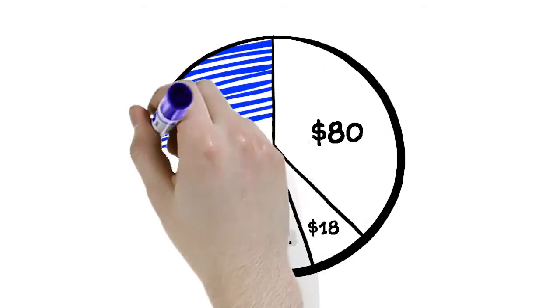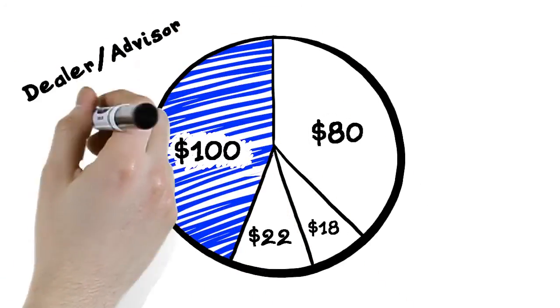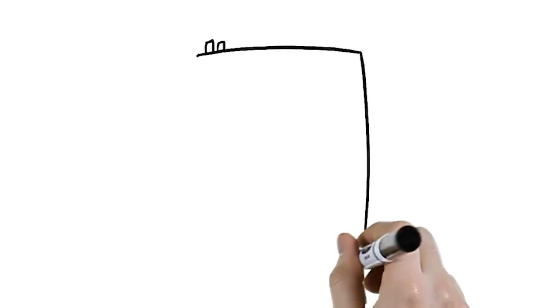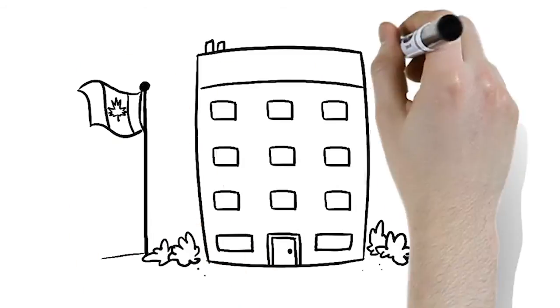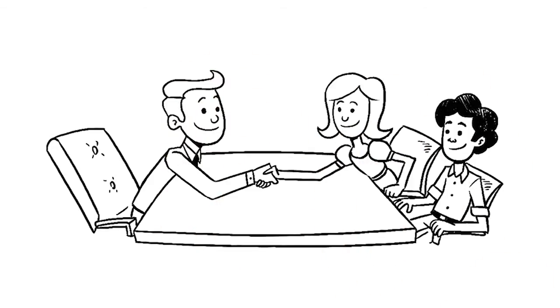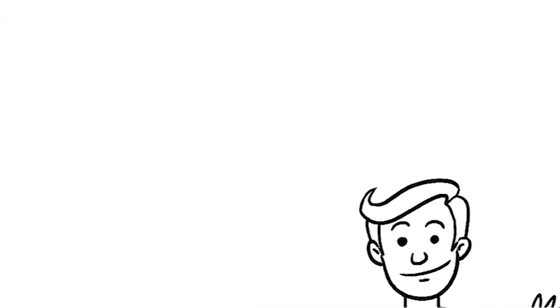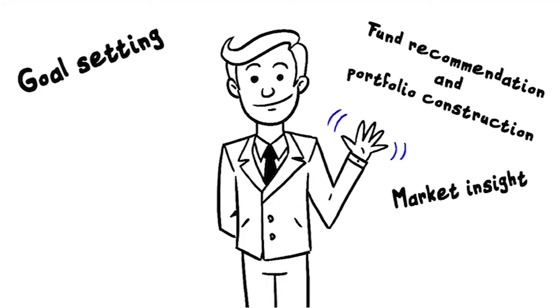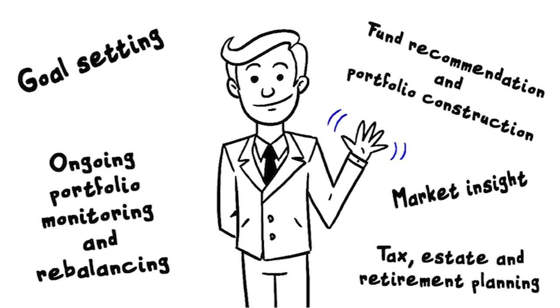Lastly, a portion of the $220 represents compensation for ongoing service and advice provided to Paul and Lisa, known as a trailing commission. This money goes to the mutual fund dealer that services Paul and Lisa's account, and the dealer pays a portion of this to the advisor. Paul and Lisa's advisor earns this commission by providing them with valuable financial planning advice and services that will help them reach their financial goals.